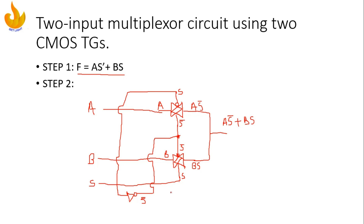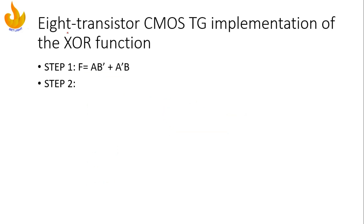That is how you can simply design a two-input multiplexer circuit using two CMOS transmission gates. Next, let's design another circuit: an eight-transistor CMOS transmission gate implementation of the XOR function. The XOR function is represented by A·B̄ + Ā·B.